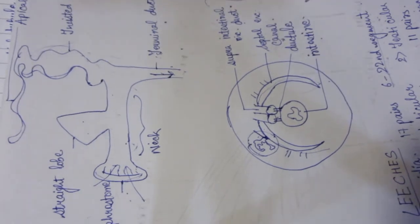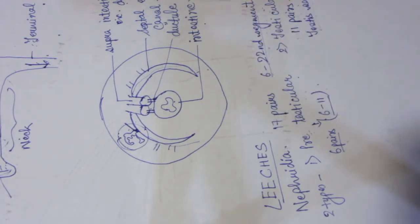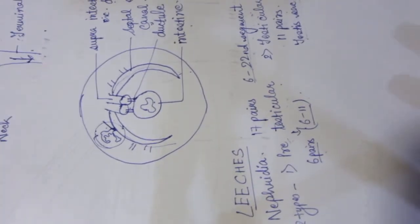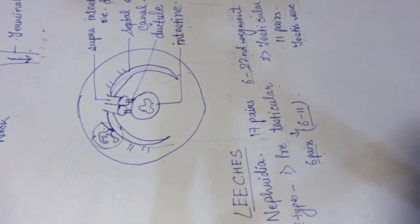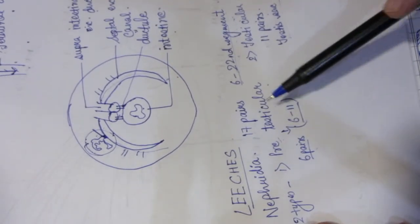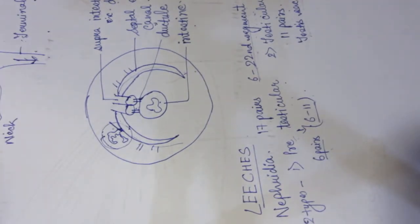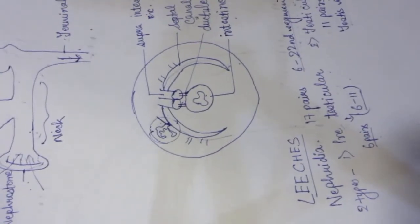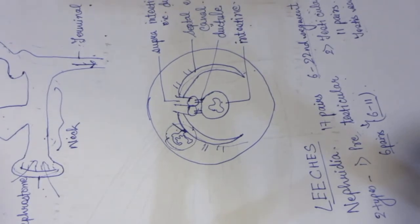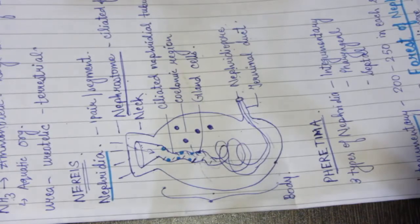In leeches, there are two types of nephridia: pre-testicular and testicular. The leech nephridia structure is very complicated and not required, but you can study it for extra information. This was all about phylum Annelida. In our next video, we will start with phylum Mollusca. Till then, make notes and keep studying.